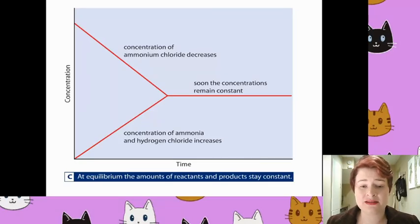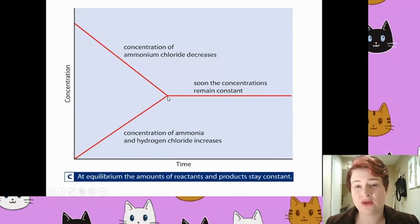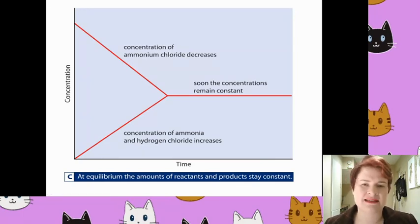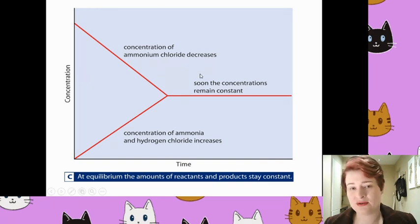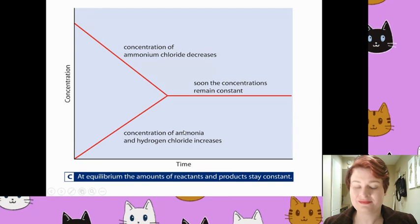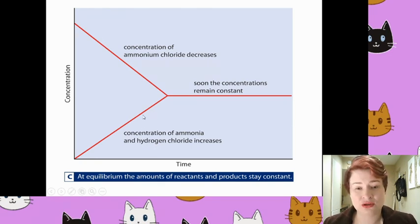At that point, assuming there are no further external contributing factors and it remains in a closed system, the concentration is going to remain constant — because ammonium chloride is decomposing at the same rate and time as ammonia and hydrogen chloride are reacting together. So concentrations remain constant.